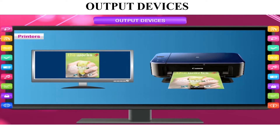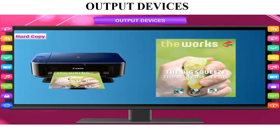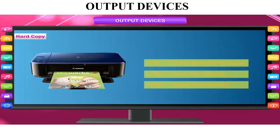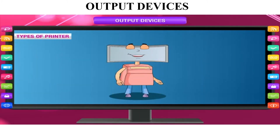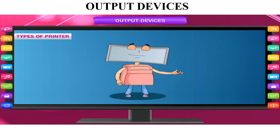The printer is another output device. The monitor displays a picture on screen, and the printer can also print that picture on paper. Printer speed is measured in CPS (characters per second), LPM (lines per minute), and PPM (pages per minute). We mainly use three types of printers.